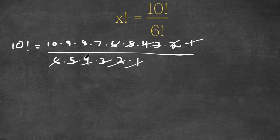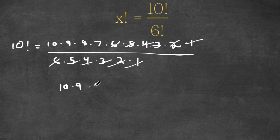So now all we're left with is simply 10 times 9 times 8 times 7, and this is equal to x factorial.